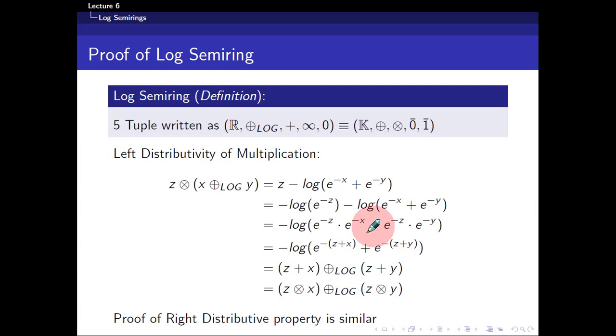So you get this expression, and you can add the exponents up together. You get this expression here. Now, this, by definition, is just this log adding this. So you can see that that's how I reached this. This is purely by definition. And again, by definition of this semi-ring, z plus x is equal to, is actually equals to z times x.